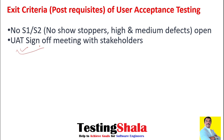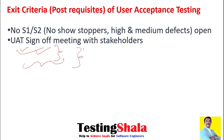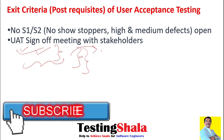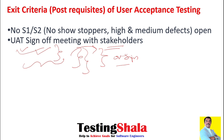Once everything is in order, the UAT team should set up a sign-off meeting where they discuss all aspects — defects, test cases, and everything covered during testing. The UAT team will then work with all stakeholders, present how testing went, and provide the overall sign-off. These are the entry and exit criteria to be defined as part of UAT acceptance testing.